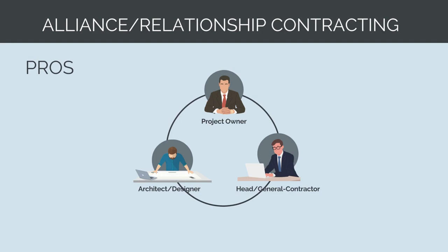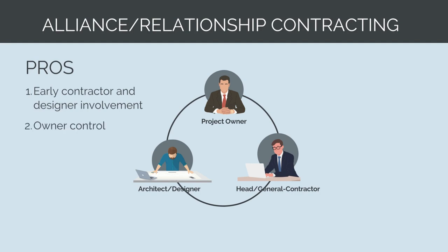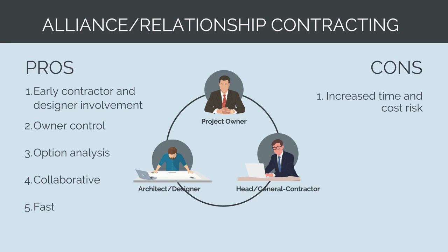The pros of an alliance model are that the contractor and design consultant are involved early, ensuring the best solution is developed. The owner retains a lot of control through delivery, and during the early feasibility and concept design stage the alliance team can explore lots of different options to save cost and time. This model is collaborative, largely avoiding disputes between the owner and contractor, and it's fast with no need to clearly scope out and run a competitive tender. Some negatives are that the owner is still exposed to cost and schedule overrun risk — though less so than under a managing contractor model — there is some uncertainty as to total project cost and duration, and the owner doesn't benefit from competitive pricing between contractors.